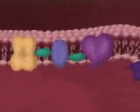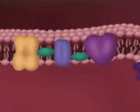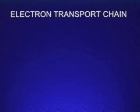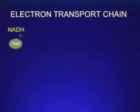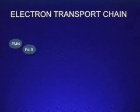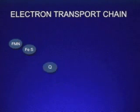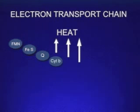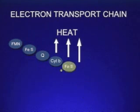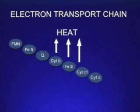NADH and FADH2 carry high-energy electrons from the previous stages of respiration to the electron transport chain. The electrons are passed from carrier to carrier and gradually lose energy. Some of this energy is used to synthesize ATP. The rest is lost as heat.